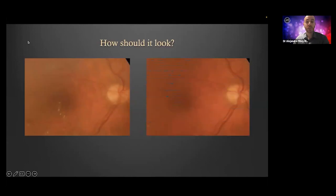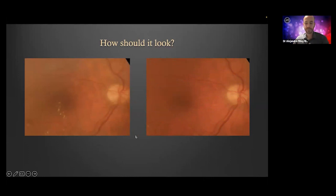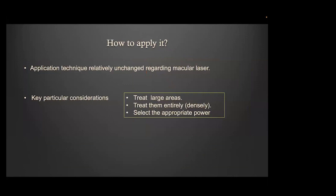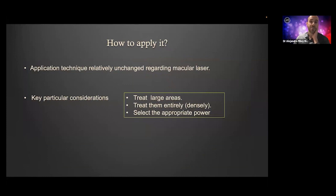So how should it look? It should not look at all. Like in this case of diabetic macular edema, you should only be able to see the results in the resolution of the exudates. Here you can see some spots, but they belong to an older treatment. Knowing how a laser becomes subthreshold, what it means to be subthreshold, and why we want it to be subthreshold — how do we deliver it to have the maximum chances of good results?